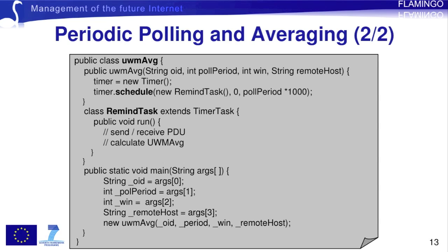The Java class for this exercise is called UWMAVG, and the main method, at the lower part of the code snippet, in addition to the target OID and the remote host address, takes two integers as arguments: the polling period in seconds, which is basically how often we poll the agent, and the window size, which represents the number of consecutive measurements we use to compute the average. In the constructor of this class, in the upper part of the snippet, we create a new timer object, and we schedule a task called the remind task, which is executed at every polling period. This involves sending and receiving the PDU and calculating the average.